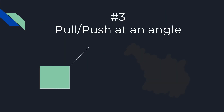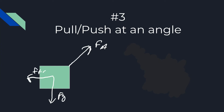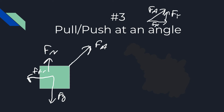Speaking of pulling at an angle, this is the third most common question. Let's say you're pulling with an applied force at an angle. The typical free body has gravity coming down, friction to the left, and the normal force going up — that's your pure free body. Off to the side, you can break the applied force into components: part of the force is horizontal and part is vertical.